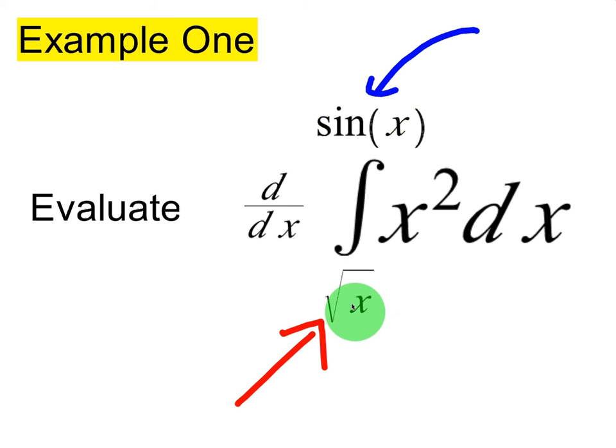These have to be functions for Fundamental Theorem Part 2 to really apply. You could still do it with constants and get zero back. It's more interesting in Part 2 when these are actual functions with x in them, because then you have to multiply by the derivative when you plug it in.